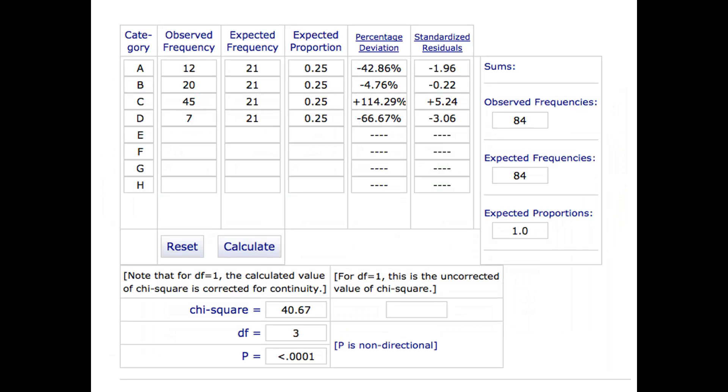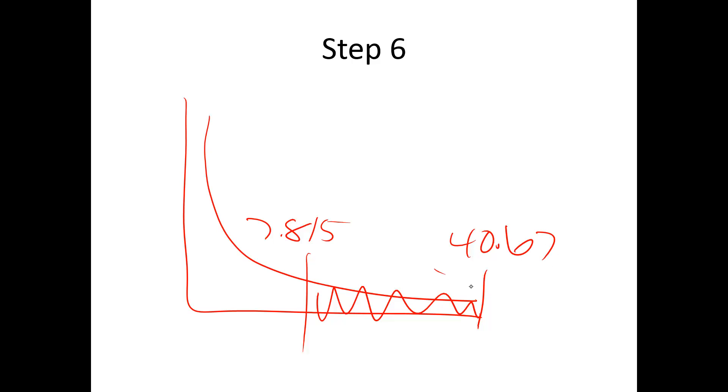So enter this into VassarStats website, so be sure you enter these values and then these values. It tells you your observed and expected frequencies, and then here's chi-square right here. So chi-square is 40.67. And we got three degrees of freedom, so we did that part right, or I did it the second time anyway. So is that significantly different, or do we reject the null? So our cutoff score was 7.815, and we're way over here at 40.67.